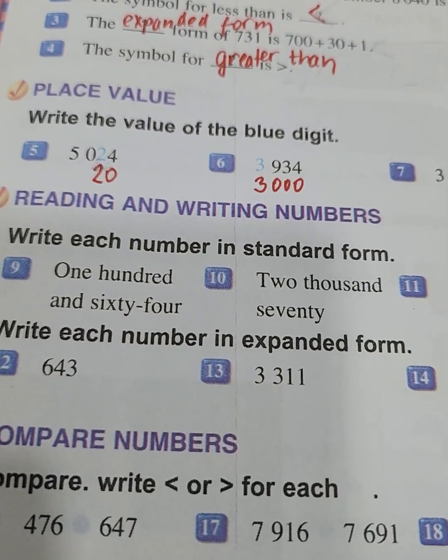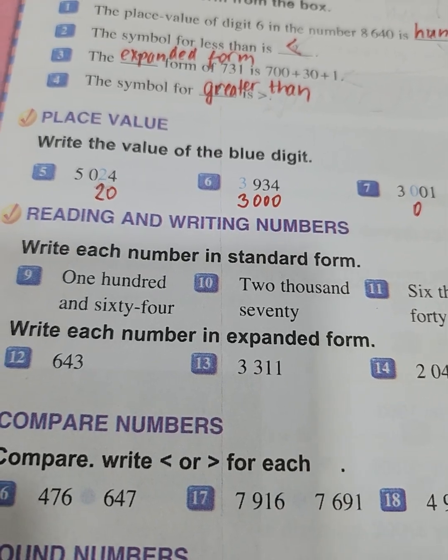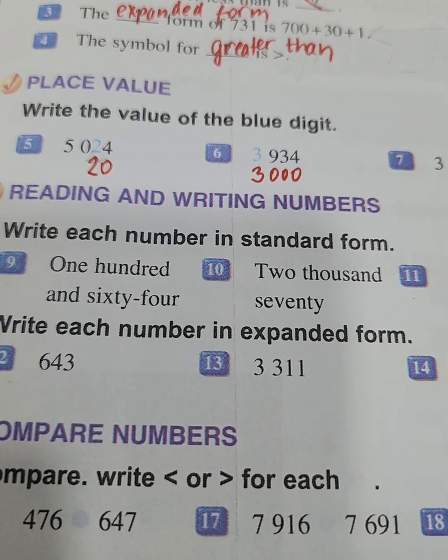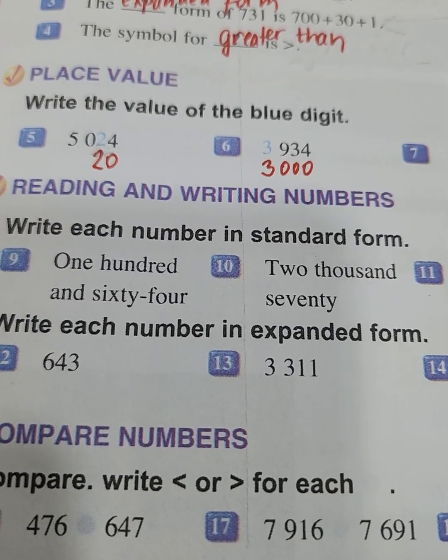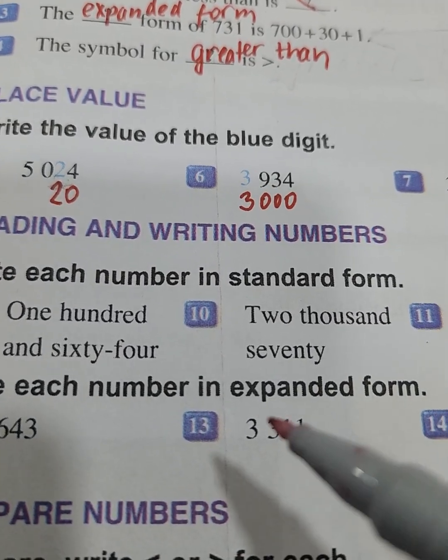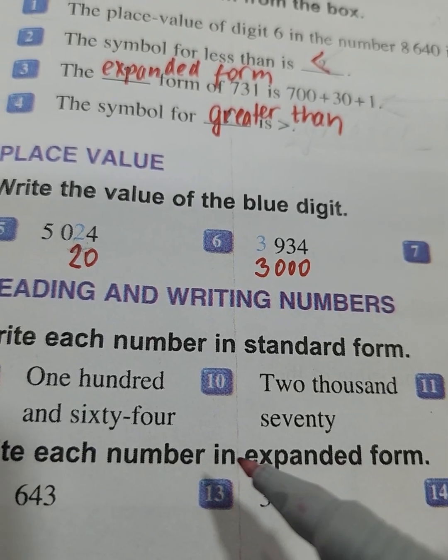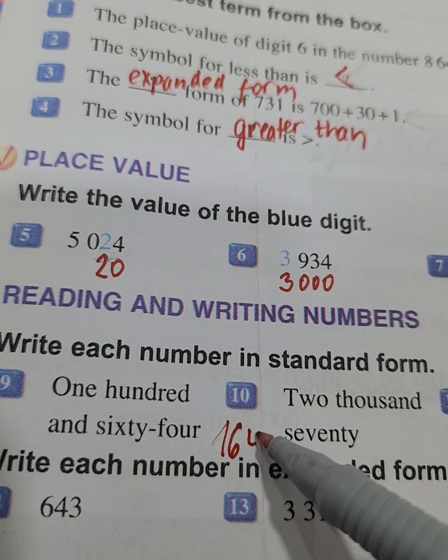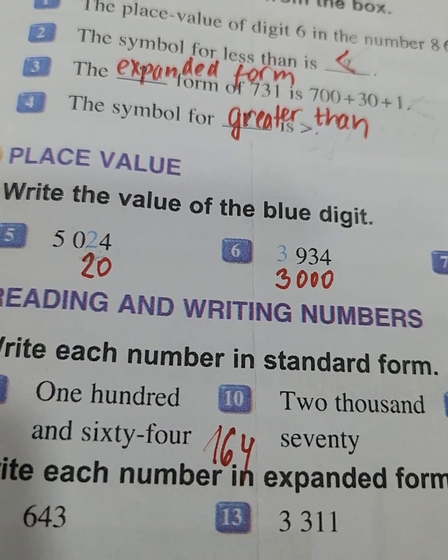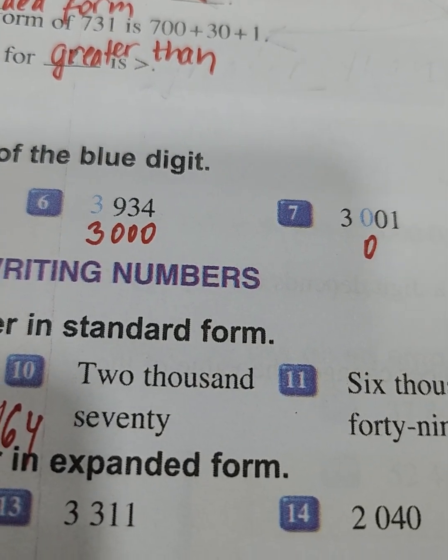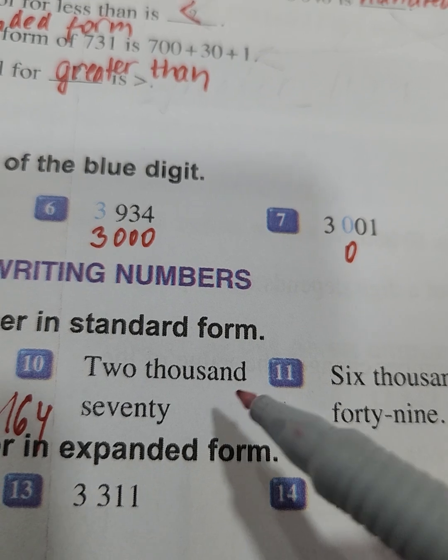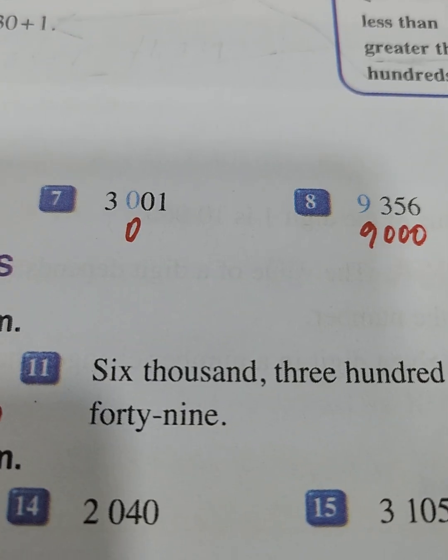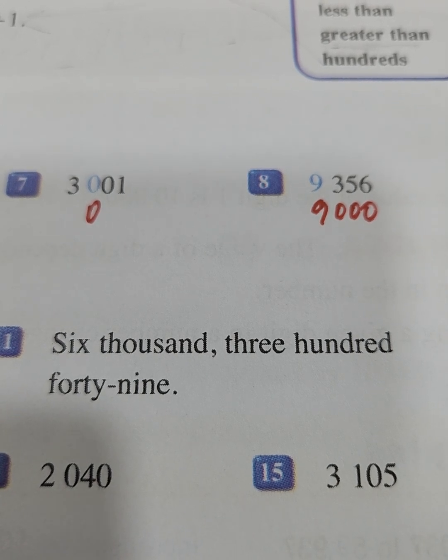After, we must do reading and writing numbers. Write each number in standard form. We must write the number 164 in standard form, so it will be 164. After we have 2070. I will write 2070 in standard form, and 6349.